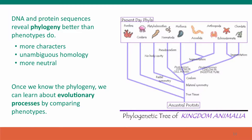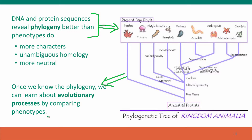DNA and protein sequences reveal phylogeny better than phenotypes do. They have more characters, the homology is unambiguous because you can only do this work when sequences are similar enough to align exactly — as we discussed in Module 1. DNA sequences also provide many neutral characters, such as silent mutations and differences in non-coding sequences. So we can use DNA sequences of living organisms to infer the phylogenetic relationships between those organisms.